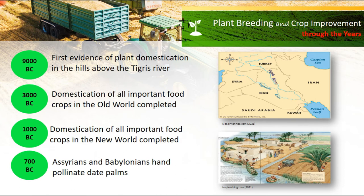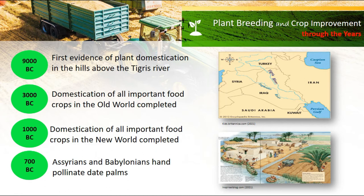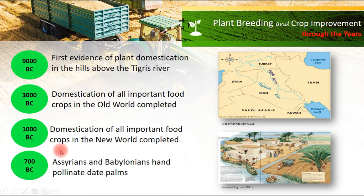Here is the flow of historical evidence of plant breeding and crop improvement through the years. In 9000 B.C., the first evidence of plant domestication appeared in the hills above the Tigris River. In 3,000 B.C., the domestication of all important food crops in the Old World was completed. In 1,000 B.C., the domestication of all important food crops in the New World was completed. The Assyrians and Babylonians are also believed to have artificially pollinated date palms around 700 B.C.